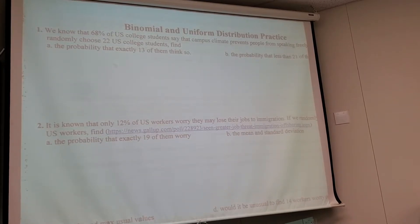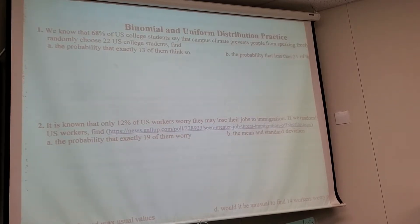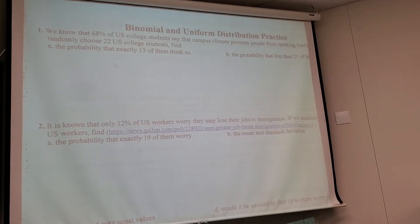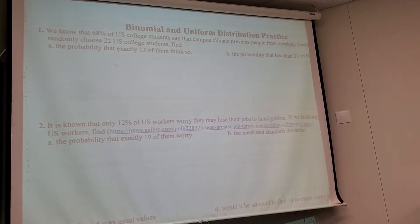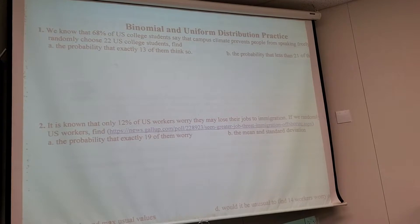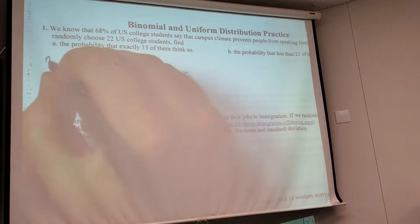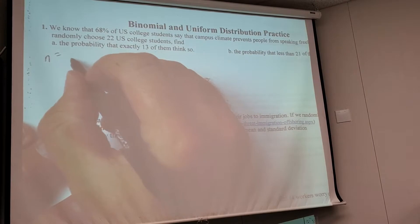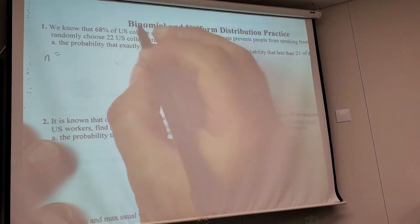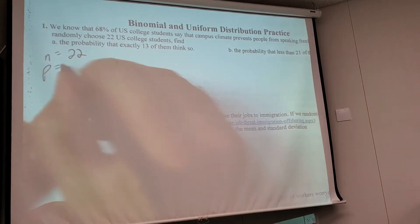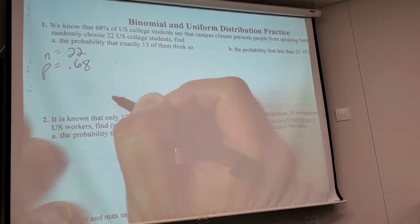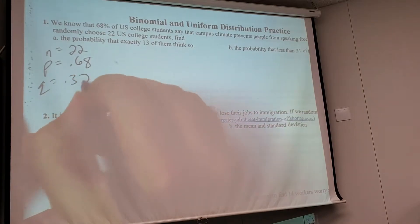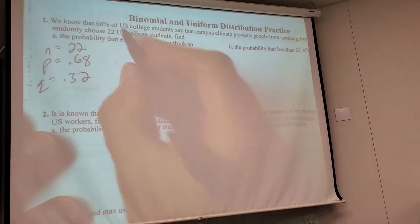Guys, everybody with me? So there's a certain look to these problems. It is very obviously not an X P of X problem because they didn't give you a table of Xs and P of Xs. So don't try to force it to be that. So n is 22, P is 0.68, Q is 0.32. And in this first problem, what's X?